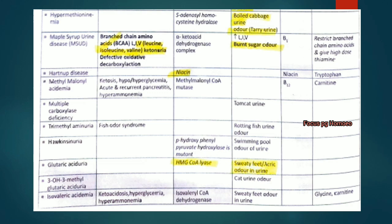Hartnup disease is associated with niacin deficiency. Methylmalonyl acidemia is associated with deficiency of methylmalonyl-CoA mutase, presenting with ketosis, hypoglycemia, acute and recurrent pancreatitis and hyperammonemia. Multiple carboxylase deficiency: patient has tomcat urine odor.